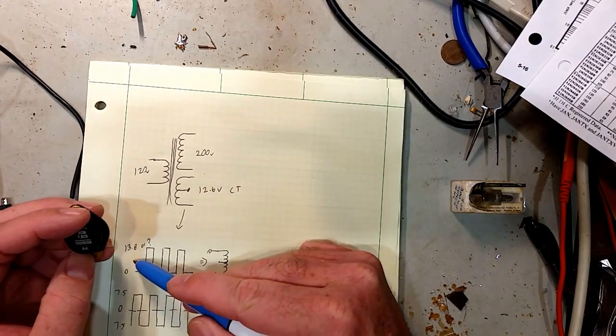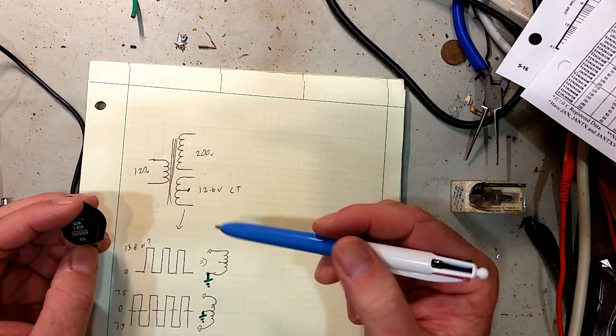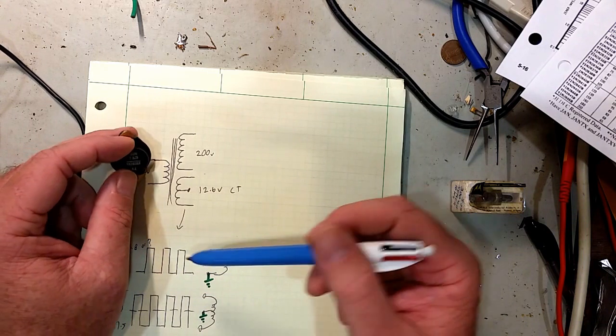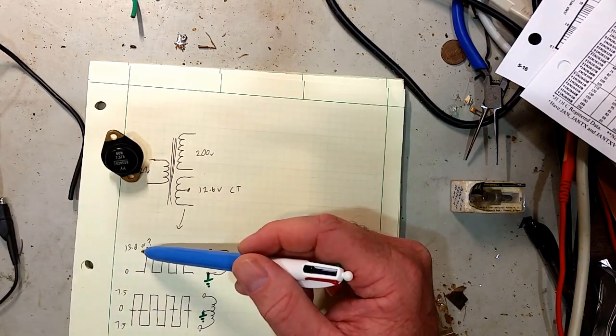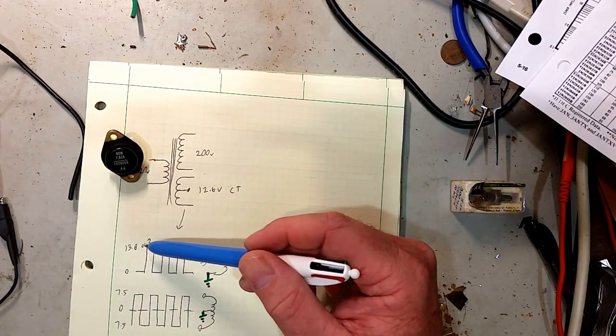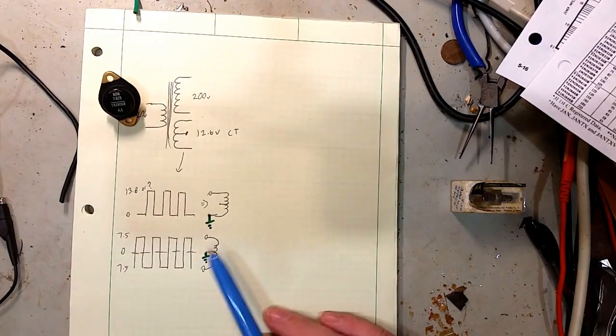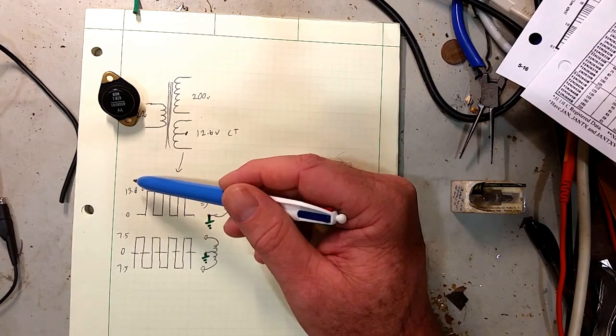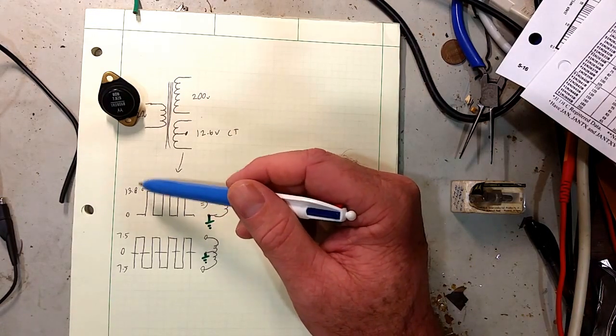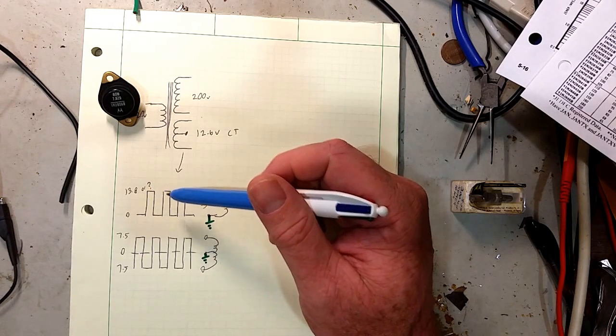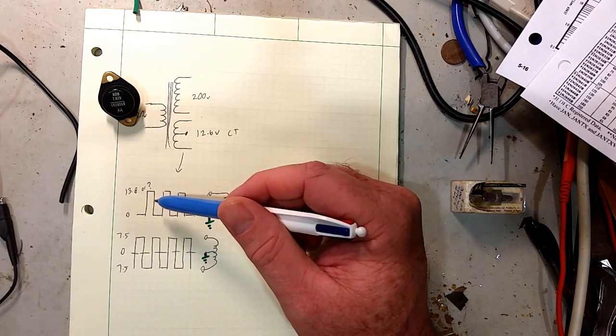The problem with this is that 13.8 comes from, that's the value that we would see when the alternator in the vehicle was running. So if the alternator is flipping on and off, we would actually see the voltage vary between 12 point something and 13.8, which is a swing of 15% or so, enough to be significant.